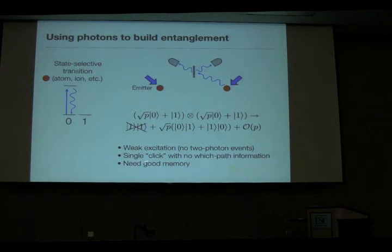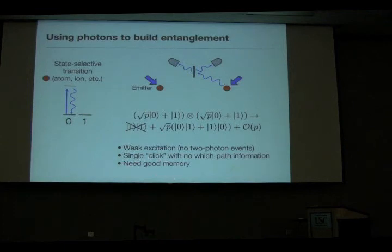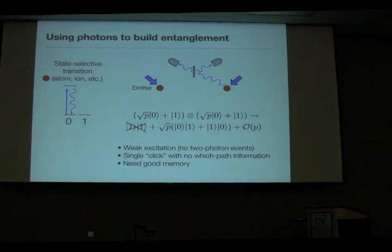What I'm going to talk about is the implicit assumption here. The implicit assumption for doing quantum tasks more interesting than just generating entanglement is that I need a good quantum memory. This procedure, when it fails — when I get no click — is destructive. I need to completely reset the emitter states before I can continue. That means if I want to do some type of teleportation-based gate, I need to keep around a quantum memory as well.